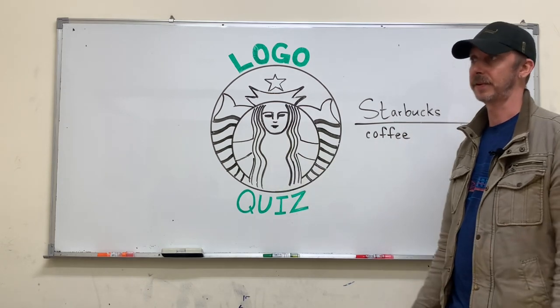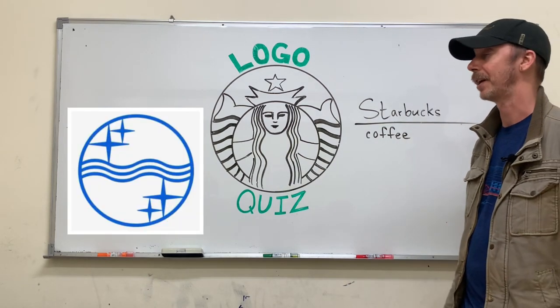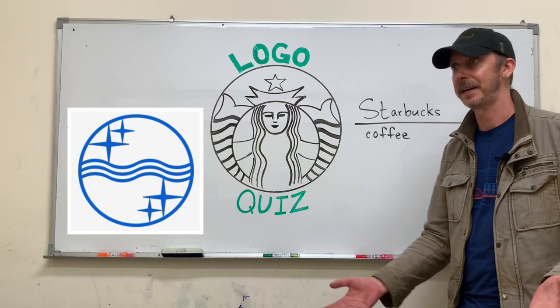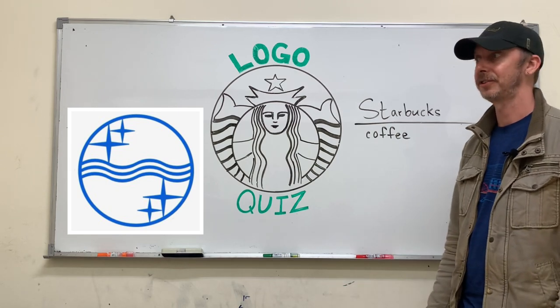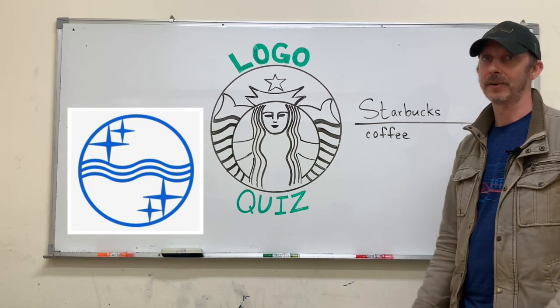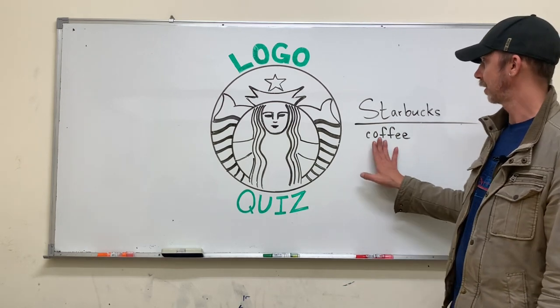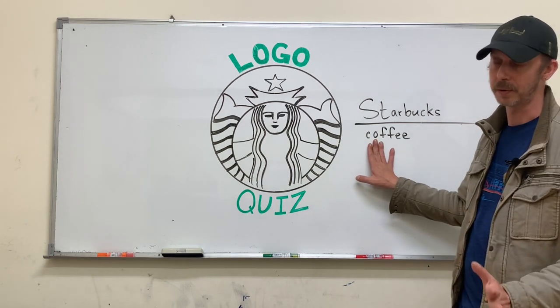Let's take a look at a different one. If you see this and you have no idea what it is, you could guess that they make cars, or that they make shoes, or clothing, something like that. So there's always a chance for you to get one point.